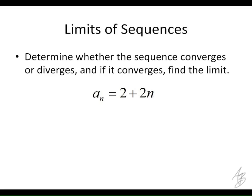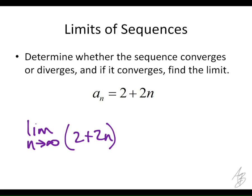How about this one? We want to find the limit as n approaches infinity of a_n, which is (2 plus 2n). Those parentheses are important — if you leave them off, you're just finding the limit of 2 and then adding 2n onto that. What happens if we plug in a really big number? You get a really big number, and plugging in an even bigger number gives an even bigger number. So this limit does not converge — this is a divergent sequence.